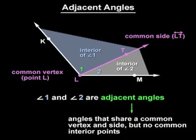Note that angle 1 and angle KLM would not be adjacent angles, even though they share a common vertex, L, and a common side, ray LK, because all the points on the interior of angle 1 are also on the interior of angle KLM, and adjacent angles cannot share common interior points.